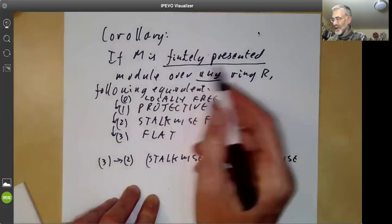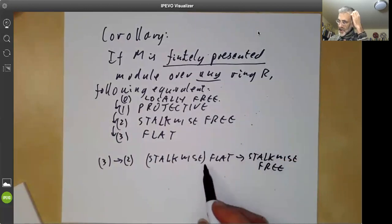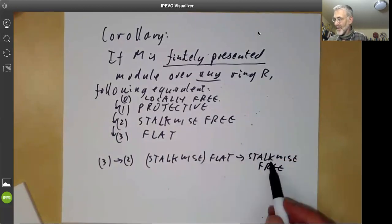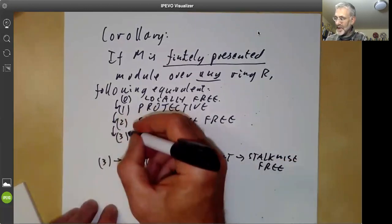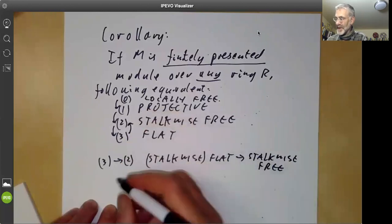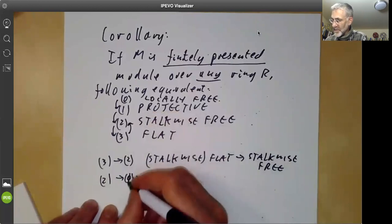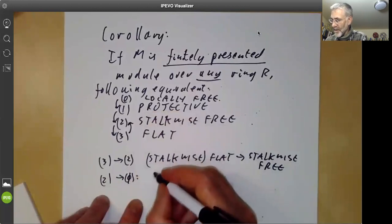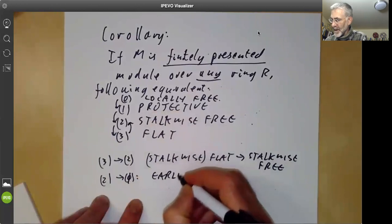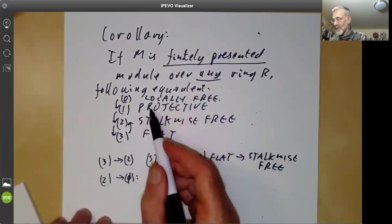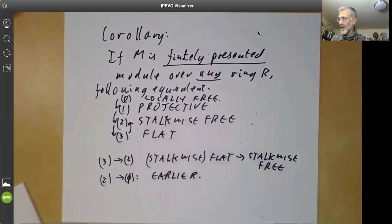Because since M is finitely presented and the stalks are flat over local rings, it means they're free over local rings. So three implies two for finitely presented modules, and two implies zero. Well, I guess we actually needed two implies one we did earlier.